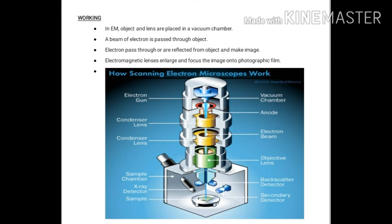Working mein aap ko lohe ke ek container nazar aa raha hoga jis ke andar vacuum pump ke zariye se air ko remove kar diya gaya hai — yeh vacuum chamber ban gaya hai. Is vacuum chamber mein sabse top par blue color mein electron gun yaani cathode laga hua hai, us ke neeche red color mein anode hai, us ke neeche do blue color mein condenser lenses hain, aur neeche green color ka objective lens hai. Base mein specimen pada hoga aur side pe X-ray detector aur different electromagnetic lenses honge jo screen par focus karenge.